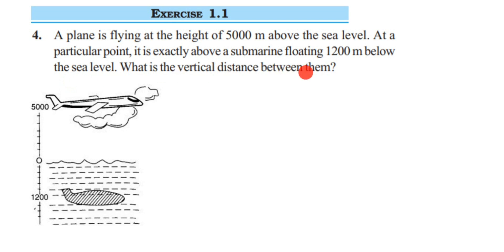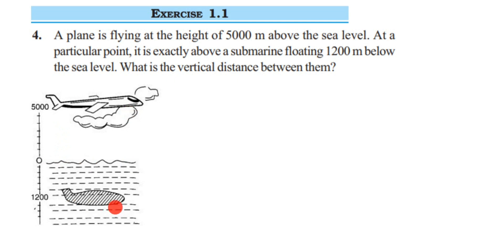They have given that there is a plane flying at 5000 meters above the sea level. This is the sea level here, and exactly on top of it there is the plane flying. Exactly below the sea level there is a submarine. You can look at the figure here — we have marked zero at the sea level.